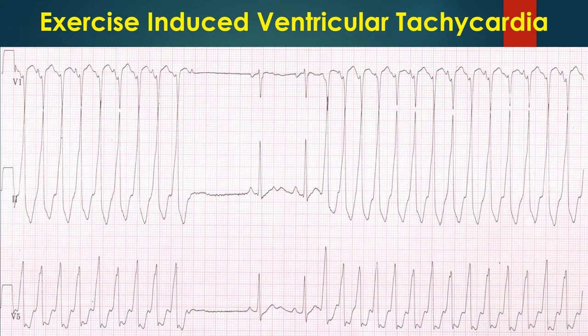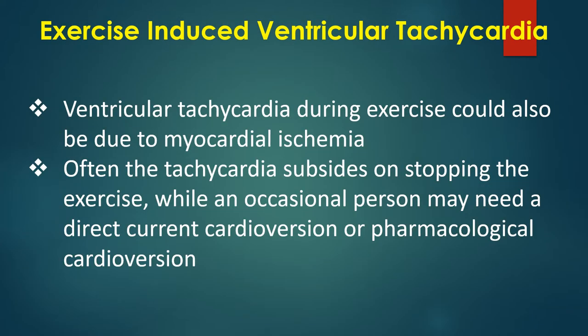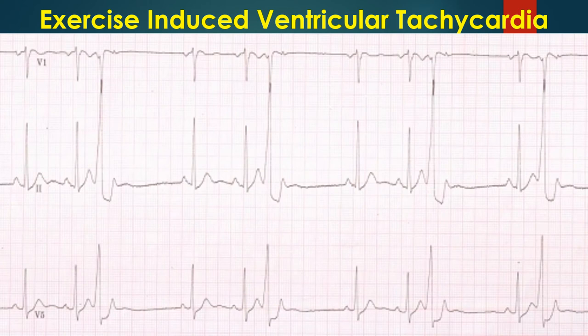This second ECG strip is the continuation of the first, where the tachycardia breaks only to restart after 2 sinus beats. The exercise had been stopped soon after the tachycardia was noted. Ventricular tachycardia during exercise could also be due to myocardial ischemia. Often the tachycardia subsides on stopping the exercise, while an occasional person may need direct current cardioversion or pharmacological cardioversion. The ECG tracing during recovery shows that the tachycardia has subsided but ventricular ectopics occurring in a trigeminal pattern with R-on-T phenomenon are seen.